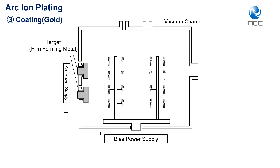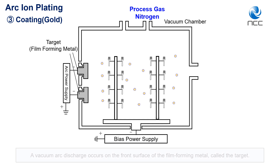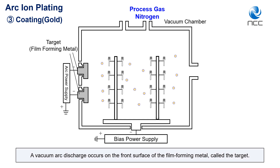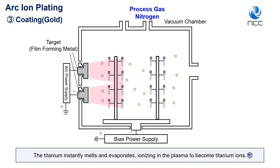Coating in Case of Gold. Nitrogen is injected as a process gas. A vacuum arc discharge occurs on the front surface of the film-forming metal, called the target. The titanium instantly melts and evaporates, ionizing in the plasma to become titanium ions.